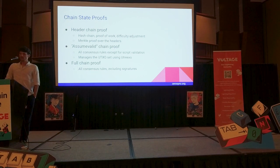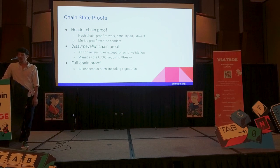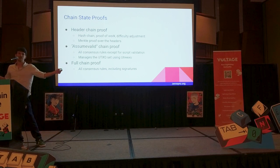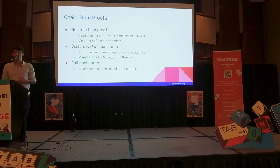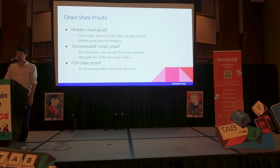We are building such a chain-sync proof in ZeroSync, and we are building it in three phases. The first is a header-chain proof, which is very similar to an SPV client. It basically proves the hash-chain — that all the headers link together. It proves the proof of work and the total work in the chain. It proves difficulty adjustments, basically everything an SPV client does. On top of that, it also computes a Merkle tree over the headers, such that you can easily prove the inclusion of any block or any transaction in the chain.